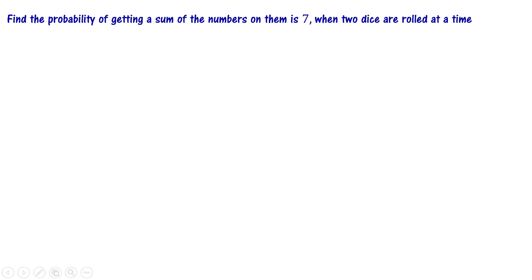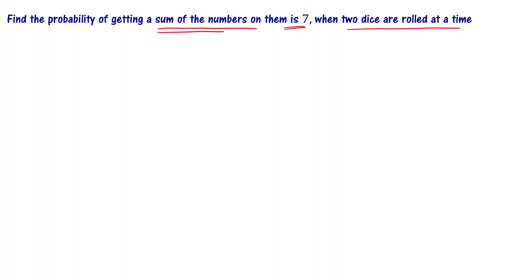Find the probability of getting the sum of the numbers on them is 7, when two dice are rolled at a time. Two dice are rolled at a time — what is the probability of getting the sum of the numbers on them is 7?